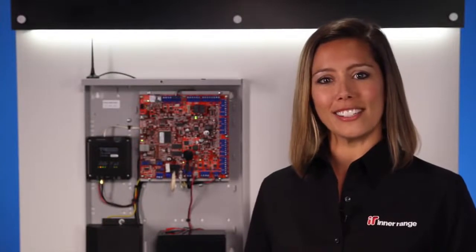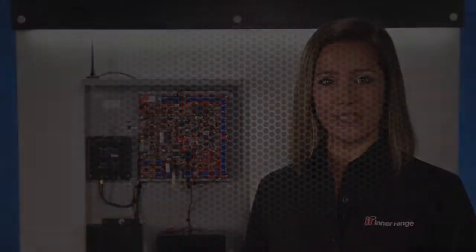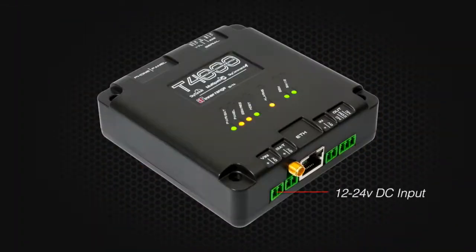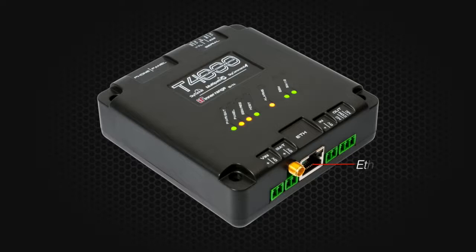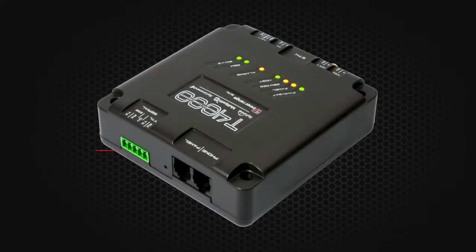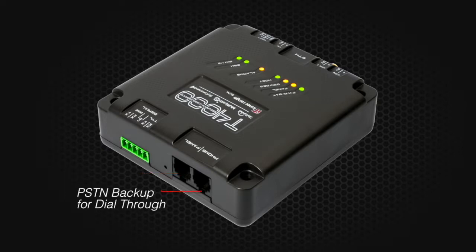Let's take a look at the T4000 and its range of connectivity options: 12 to 24 volt DC input, battery backup, Ethernet for alarm reporting, input for cabinet tamper or duress, output for key switch zone arm and disarm, high-speed serial ports, PSTN input for dialer capture, and PSTN backup for dial through.